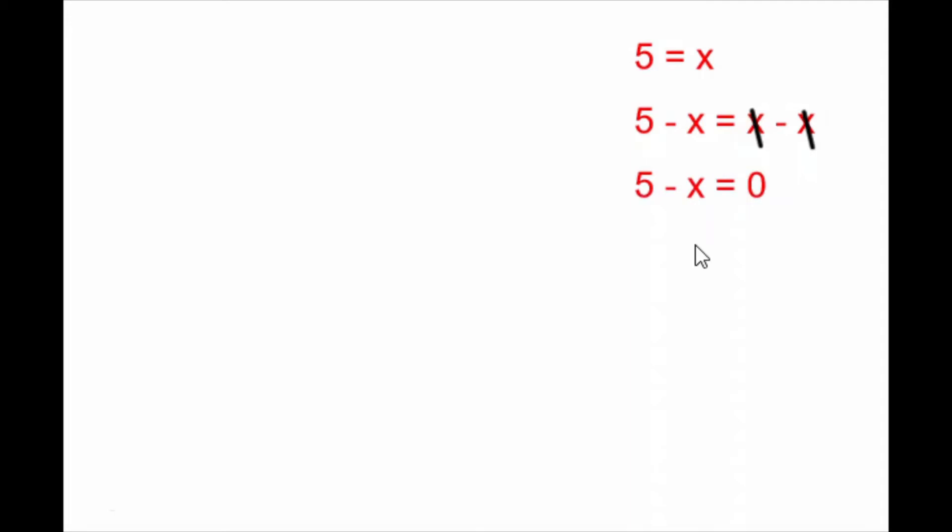But I'm not finished. I can also subtract a 5 from both sides if I wish. So I do. These 5's now cancel and I'm left with negative x equals negative 5.